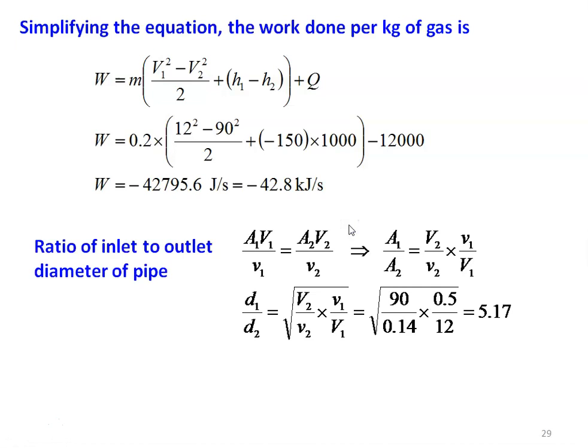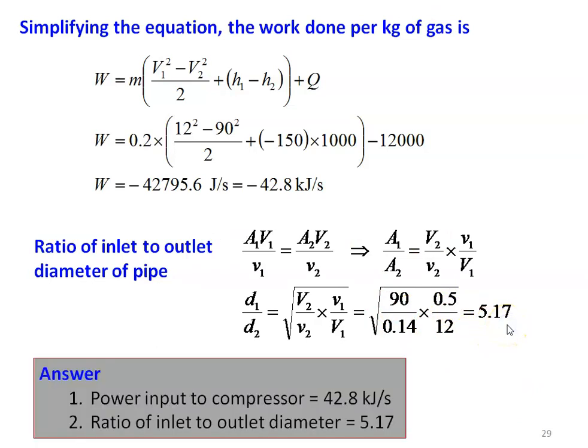Ratio of inlet to outlet pipe diameter: from continuity equation A1V1/v1 = A2V2/v2, rearranging in terms of diameter: D1/D2 = √(V2 × v1 / (V1 × v2)) = √(90 × 0.5 / (12 × 0.14)) = 5.17. Answers: power input to the compressor is 42.8 kJ/s and ratio of inlet to outlet diameter is 5.17.